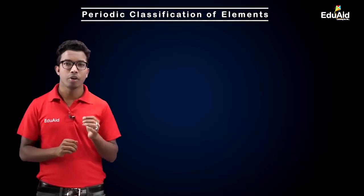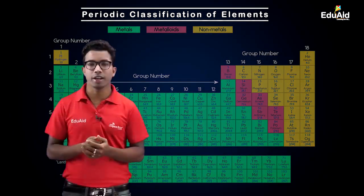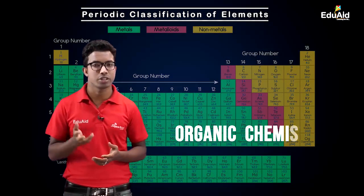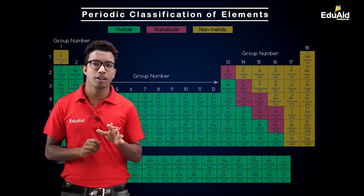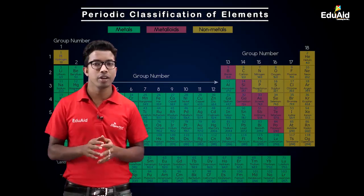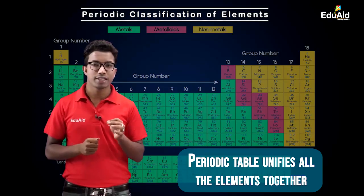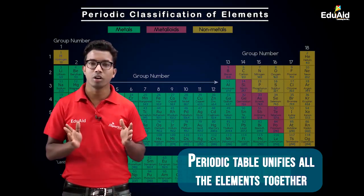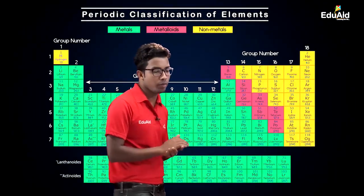Another important role played by the periodic table is that it is the only place where all 118 elements are placed together. In higher classes there are different branches like organic chemistry, which deals with different kinds of elements, but the periodic table is the only place where we can have an overall idea about all the elements together. In other words, the periodic table plays an important role in unifying chemistry — in unifying all the elements together.